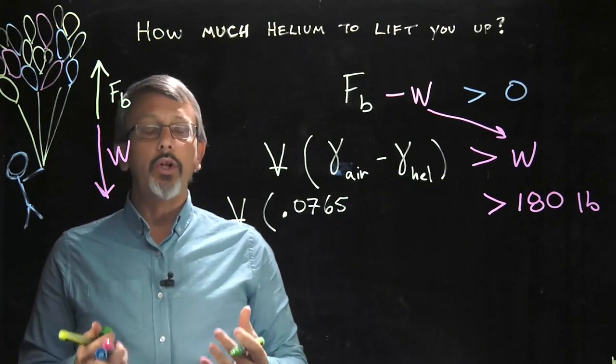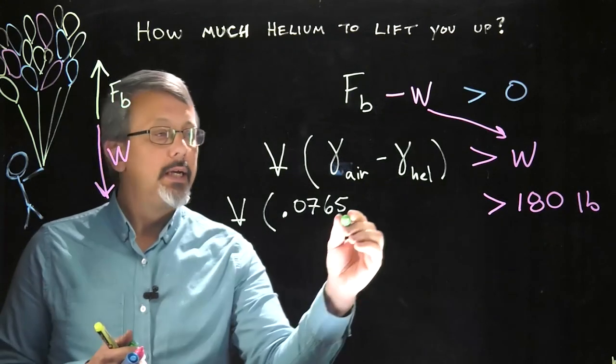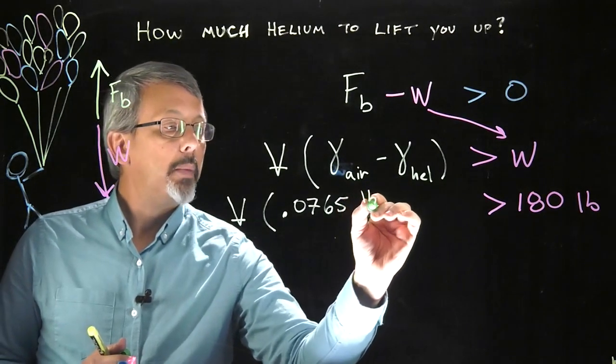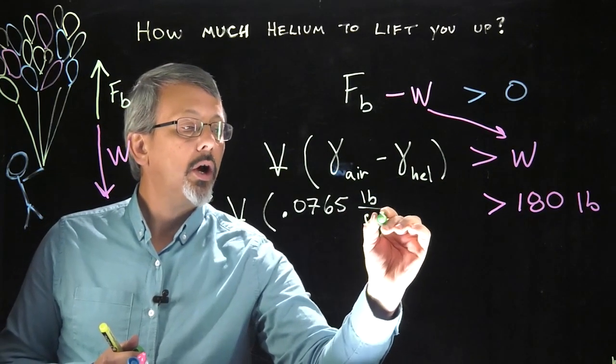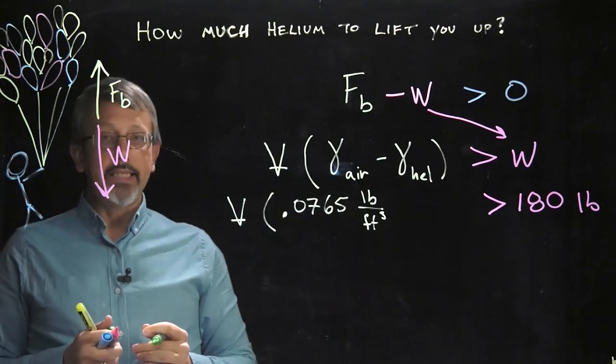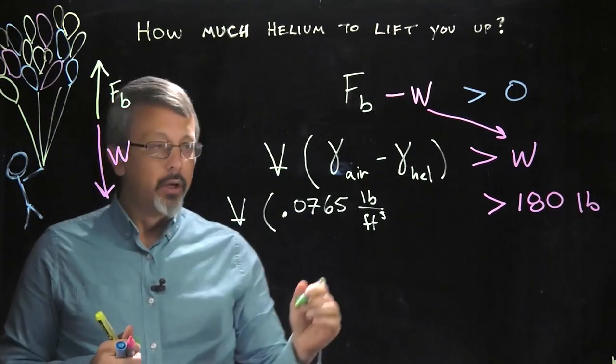The specific weight of air at standard temperature and pressures, I'm going to use a value of 0.0765. What units would I need to be using? Well, I would want to use some English units. In this case, we'll do pounds per cubic feet. I could abbreviate that as PCF.